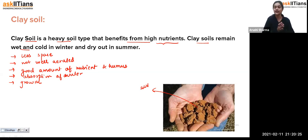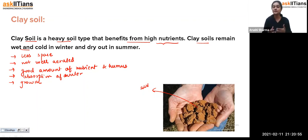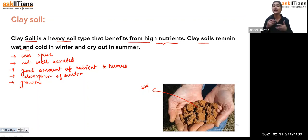Comparing clay soil with sandy soil: sandy soil does not absorb good amounts of water because of its texture, and it lacks nutrients and humus — that's why it is not good for yielding crops. Clay soil can be used for agriculture, but since it is not well aerated, it doesn't support plant growth as effectively as needed.